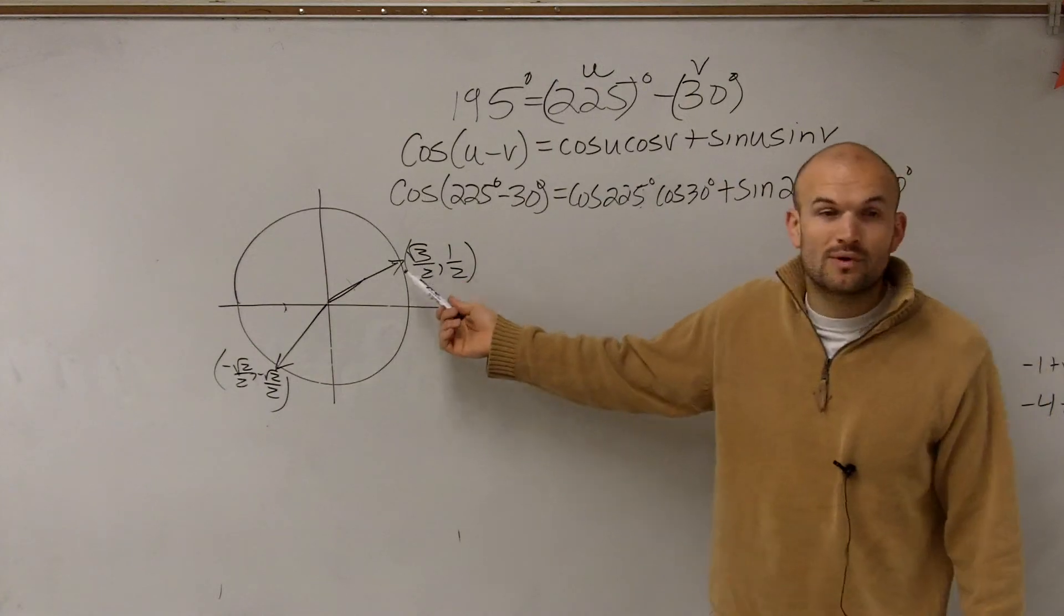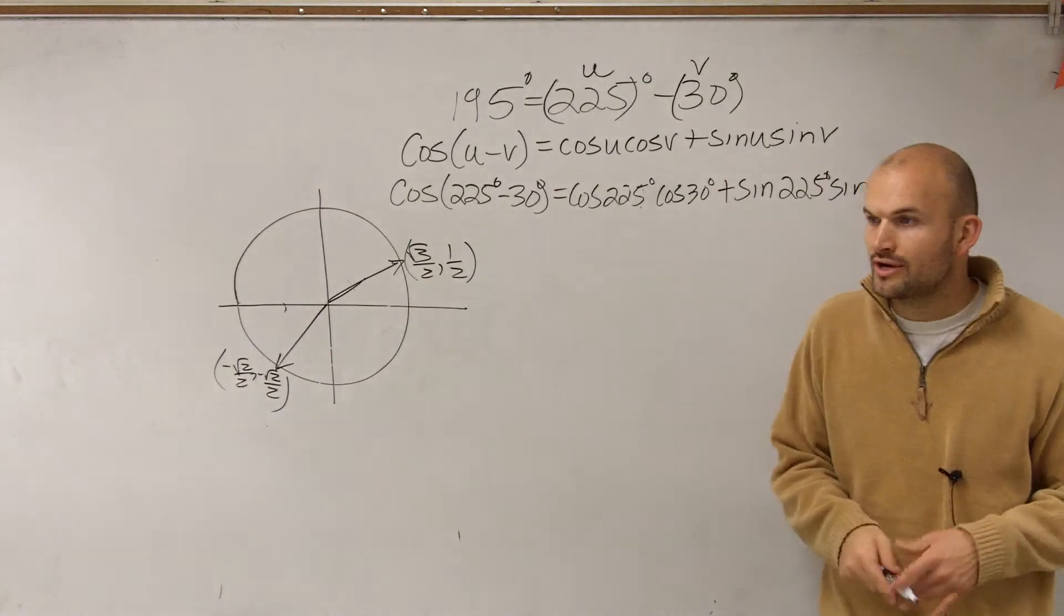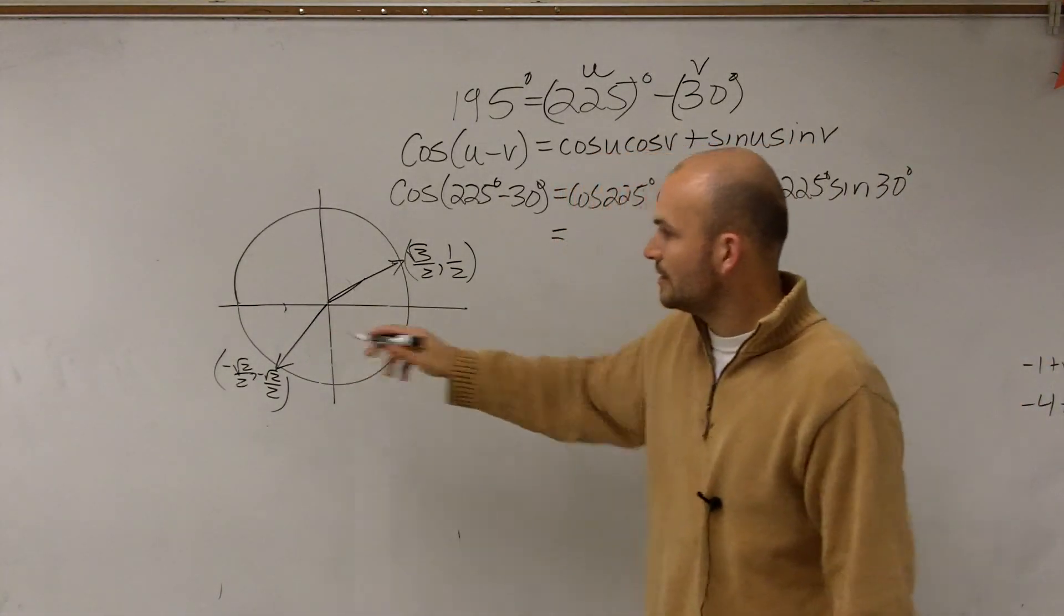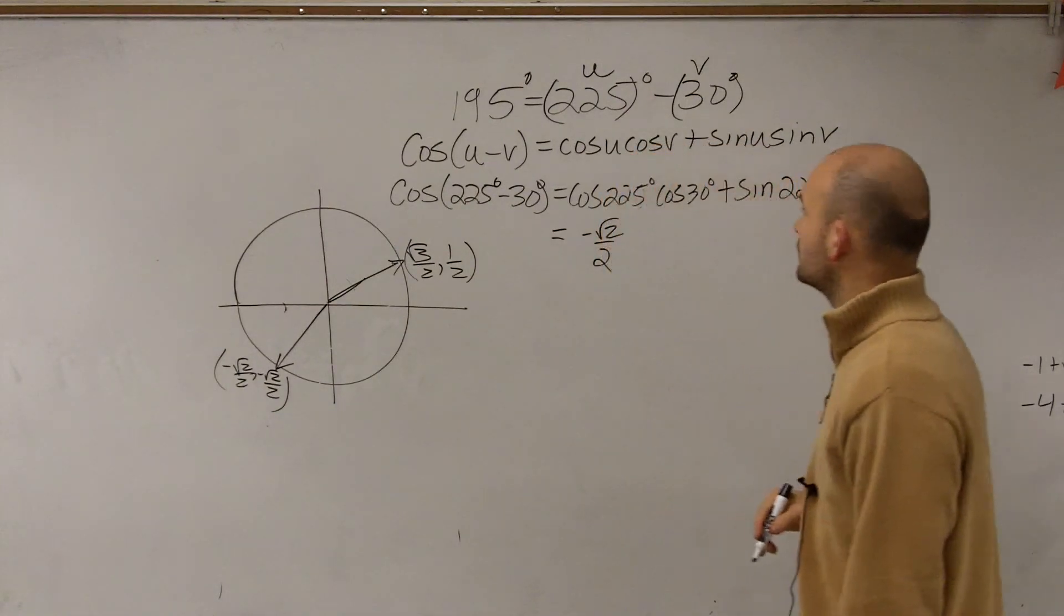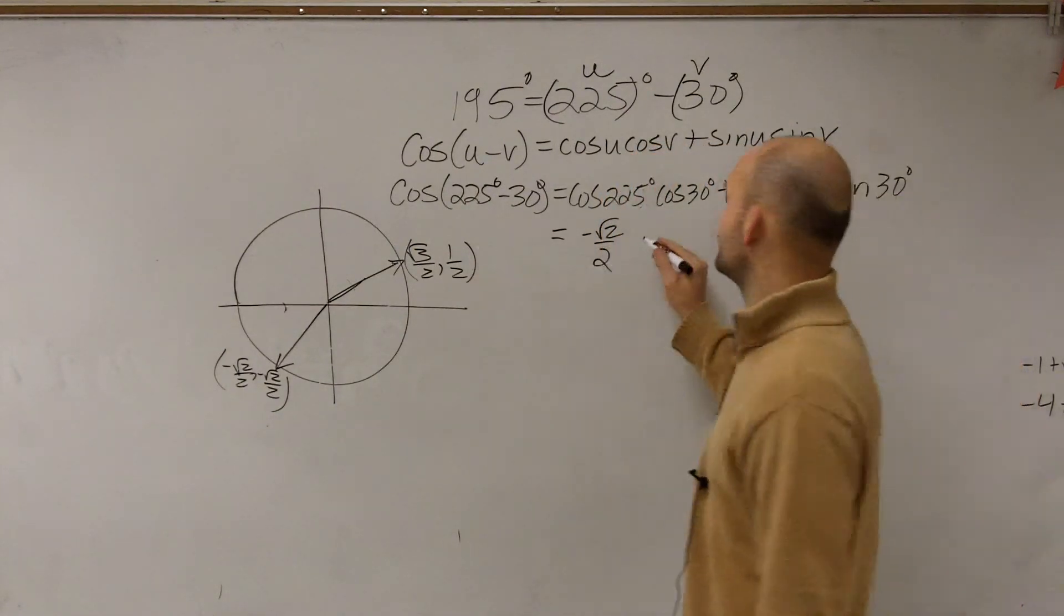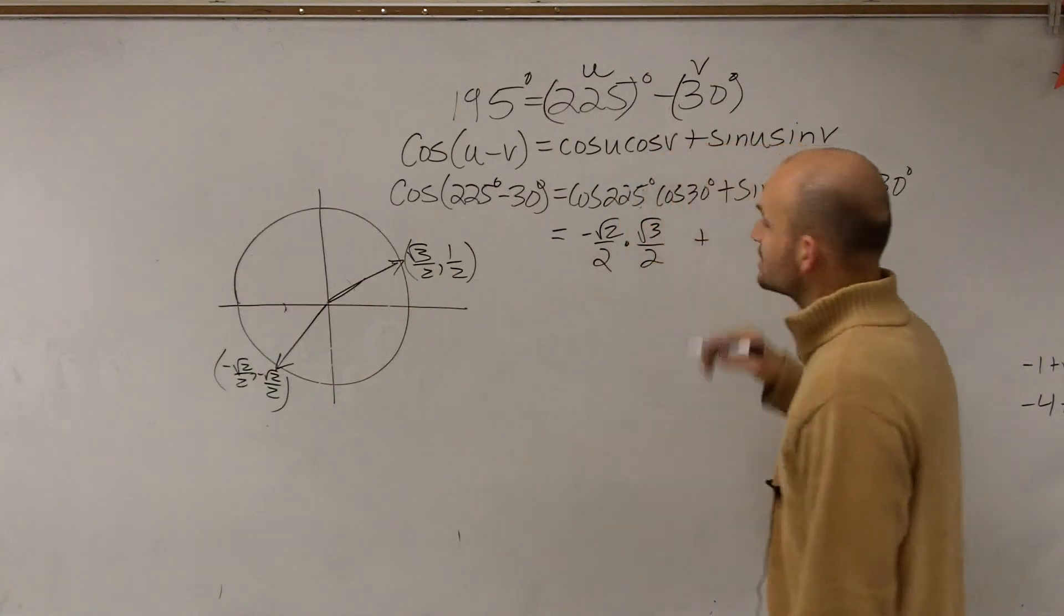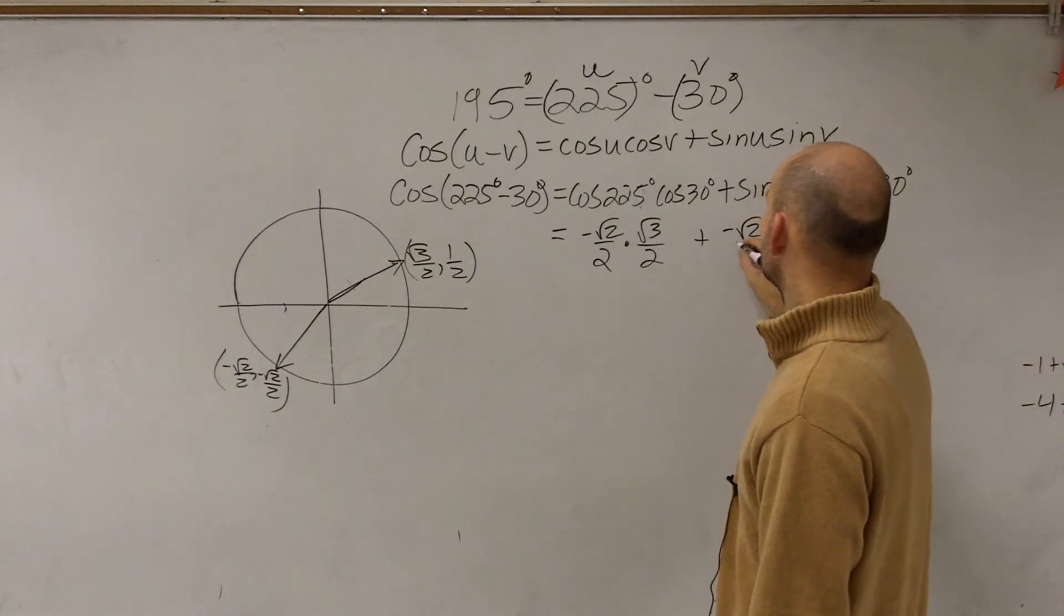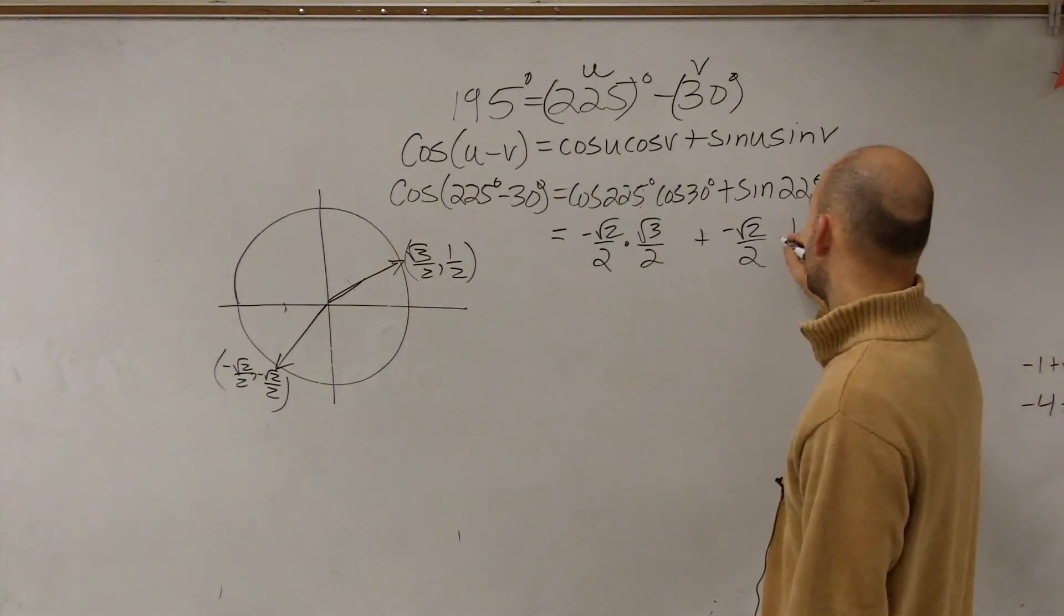And since we already wrote in what each one of these points are, we just need to evaluate by using the x and y coordinate for each one. So the cosine of 225 degrees is negative square root of 2 over 2. The cosine of 30 degrees is the square root of 3 over 2. Plus the sine of 225 degrees is negative square root of 2 over 2. And the sine of 30 degrees is 1 half.